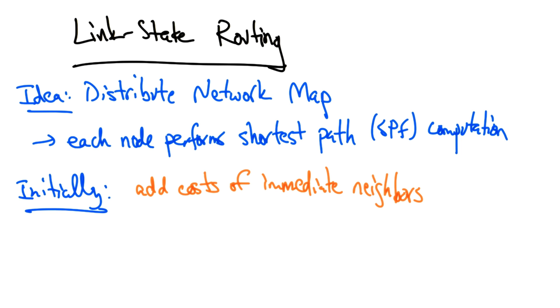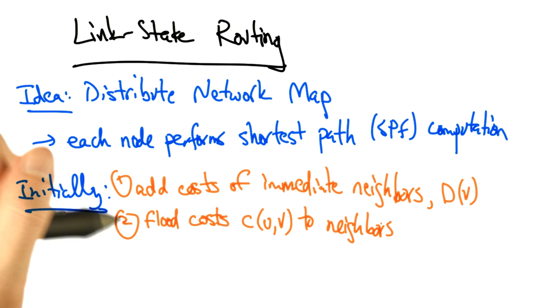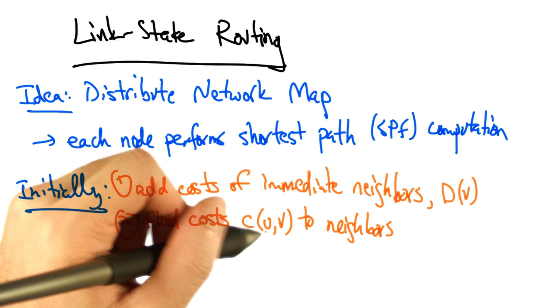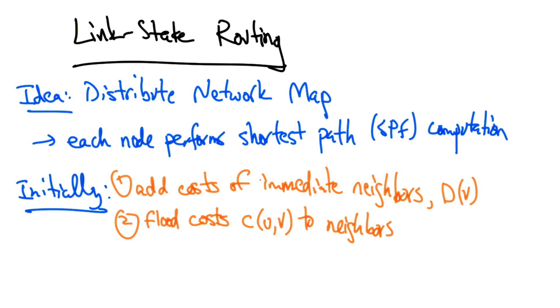So initially, each node adds the cost of its immediate neighbors D(v), and every other distance to a node that is infinite. Then each node floods the costs c(u,v) to all of its neighbors.